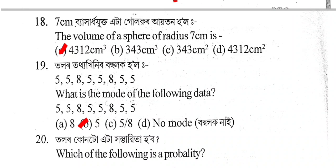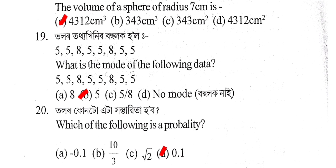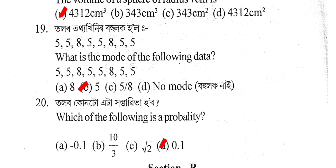Next question: The volume of a sphere of radius 7 centimeters is — 4312 cm³, 343 cm³, 343 cm², or 4312 cm²? The correct answer is Option A: 4312 cm³.